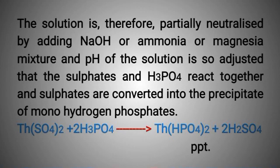The solution is therefore partially neutralized by adding sodium hydroxide, ammonia, or magnesia mixture, and the pH of the solution is so adjusted that the sulfates and phosphoric acid react together and sulfates are converted into the precipitate of monohydrogen phosphates. Thorium sulfate plus 2 phosphoric acid react and give thorium hydrogen phosphate plus 2 sulfate in precipitated form.